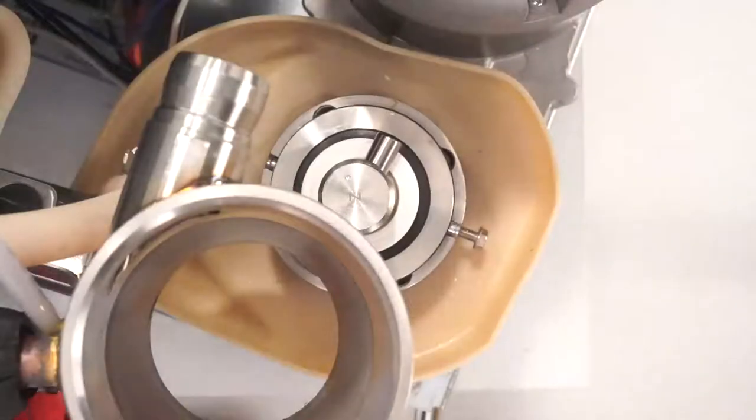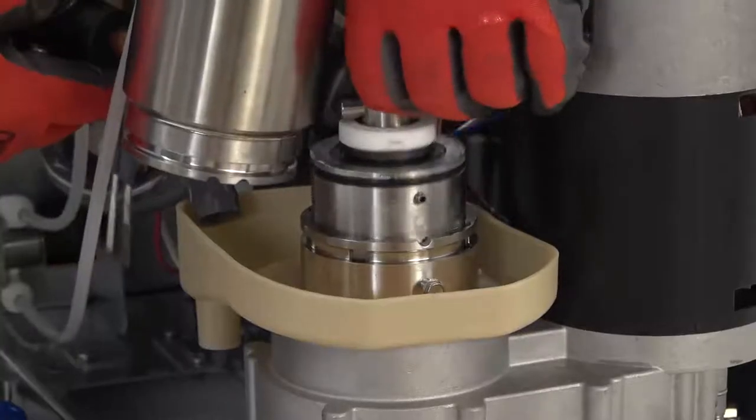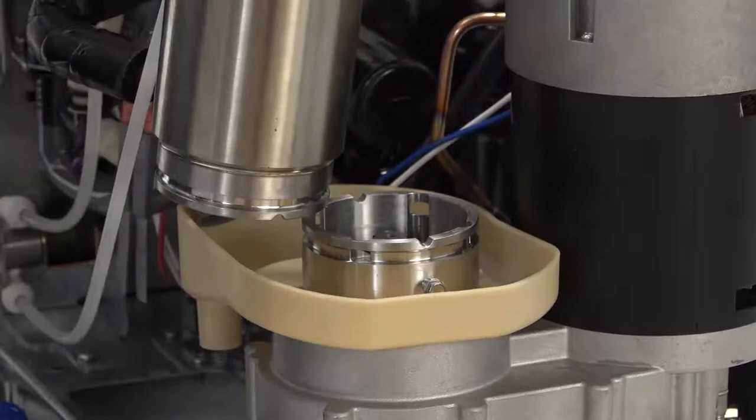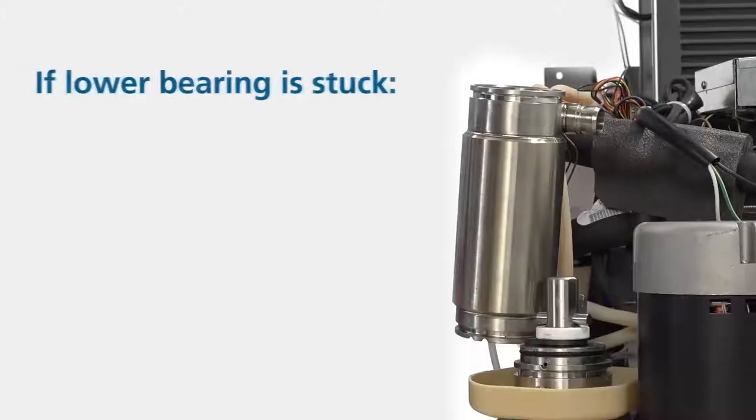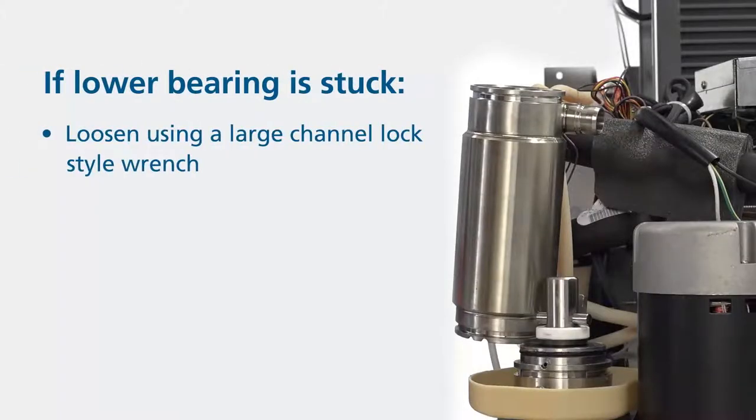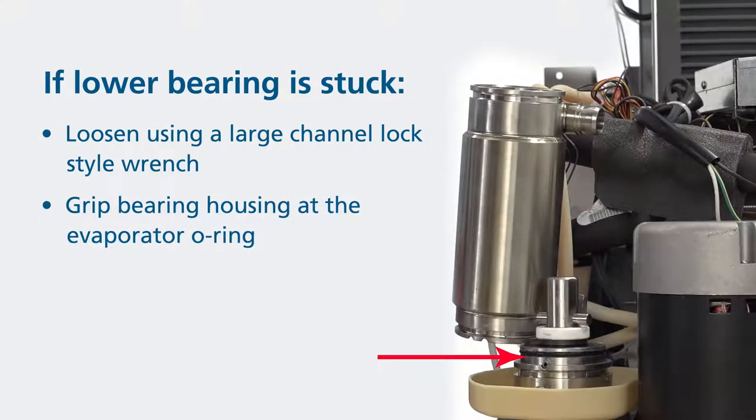Using a 5-16 inch nut driver, loosen the set screw on the side of the mounting base. Back the screw out several turns. Lift and remove the lower bearing assembly from the evaporator mounting base. If the bearing is stuck, it can be loosened using a large channel lock style wrench. Grip the lower bearing housing at the evaporator O-ring and jiggle back and forth to loosen the bearing housing in the mounting base.